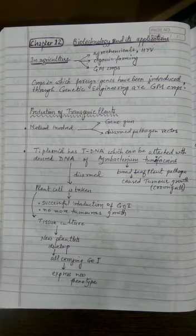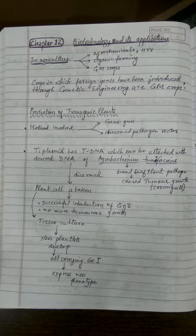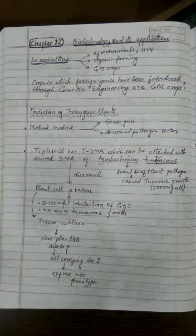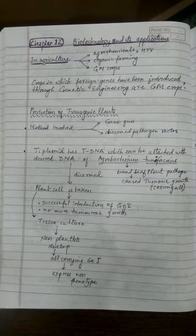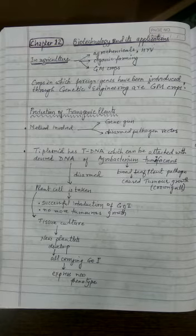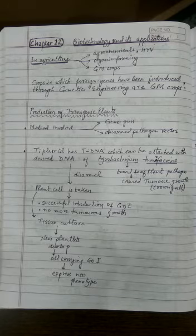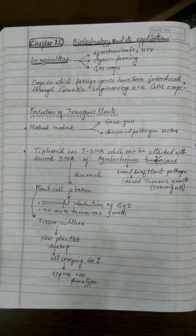An example of reducing post-harvest loss is the Flavr Savr tomato variety. It is also possible to increase the efficiency of mineral usage by crop plants, which helps prevent the early exhaustion of soil fertility. Furthermore, GM crops can be made into biofortified crops, making them more efficient in meeting daily requirements of minerals and nutrients. For example, vitamin A or beta-carotene enriched rice, called Golden Rice, is an example of a biofortified crop.